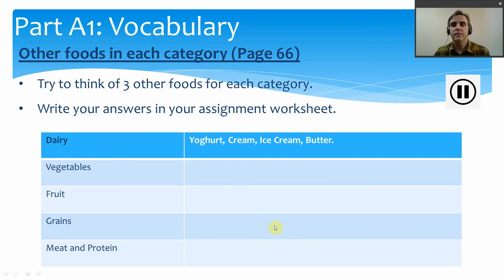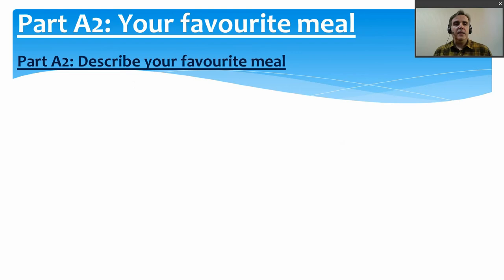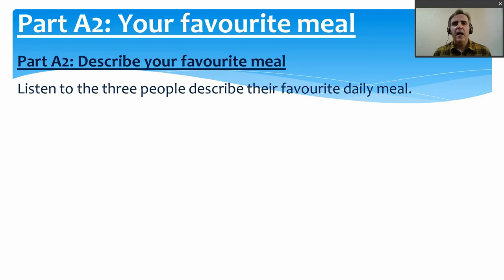We will go on to the next part, which is about your favourite meal. A lot of people eat three meals a day: breakfast in the morning, lunch around midday or early afternoon, and dinner in the evening, maybe six or seven o'clock. For me, I very rarely eat breakfast — maybe once every two weeks — but I usually eat lunch and dinner. Now we are going to listen to some people talking about their favourite meal of the day.